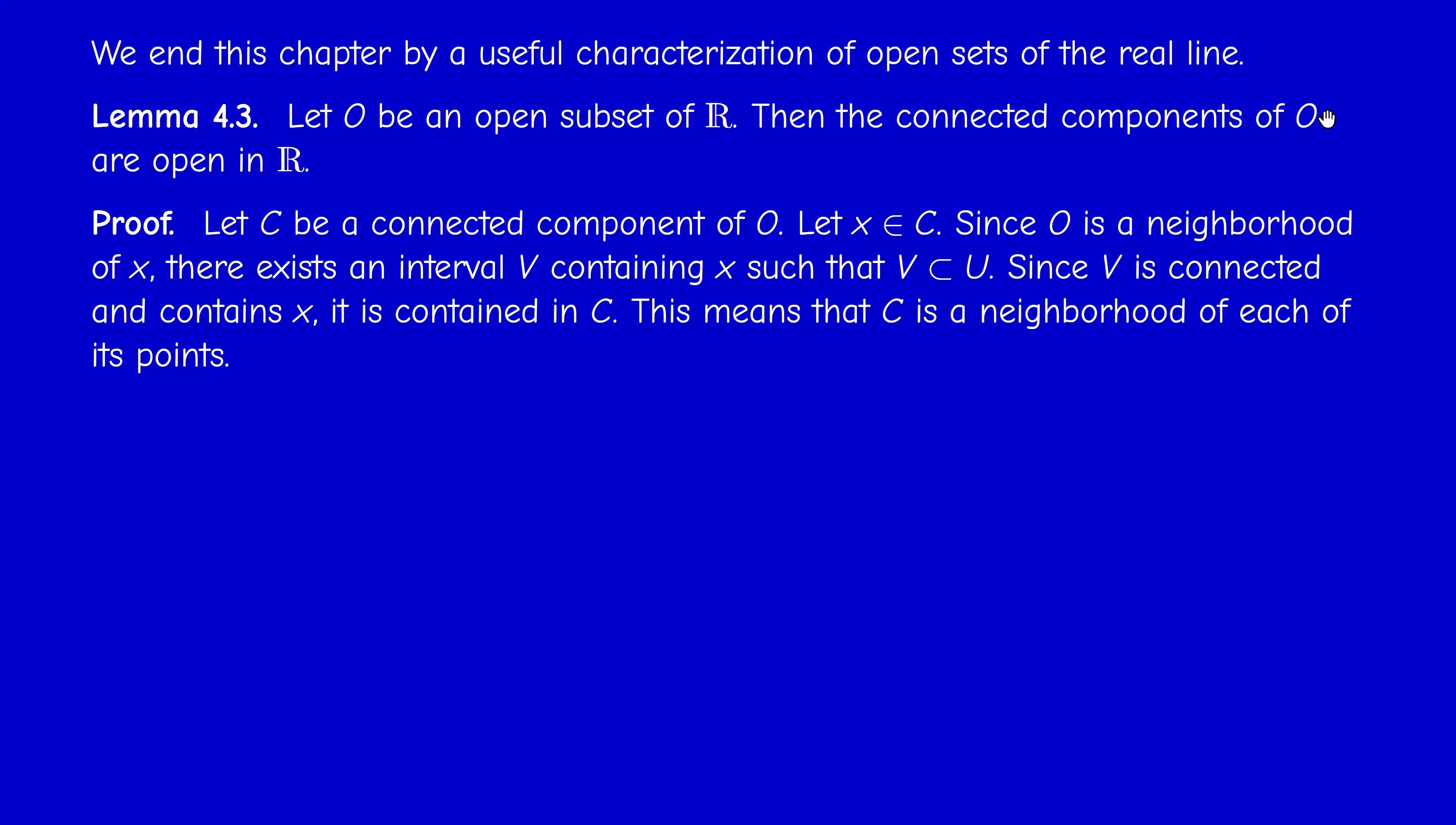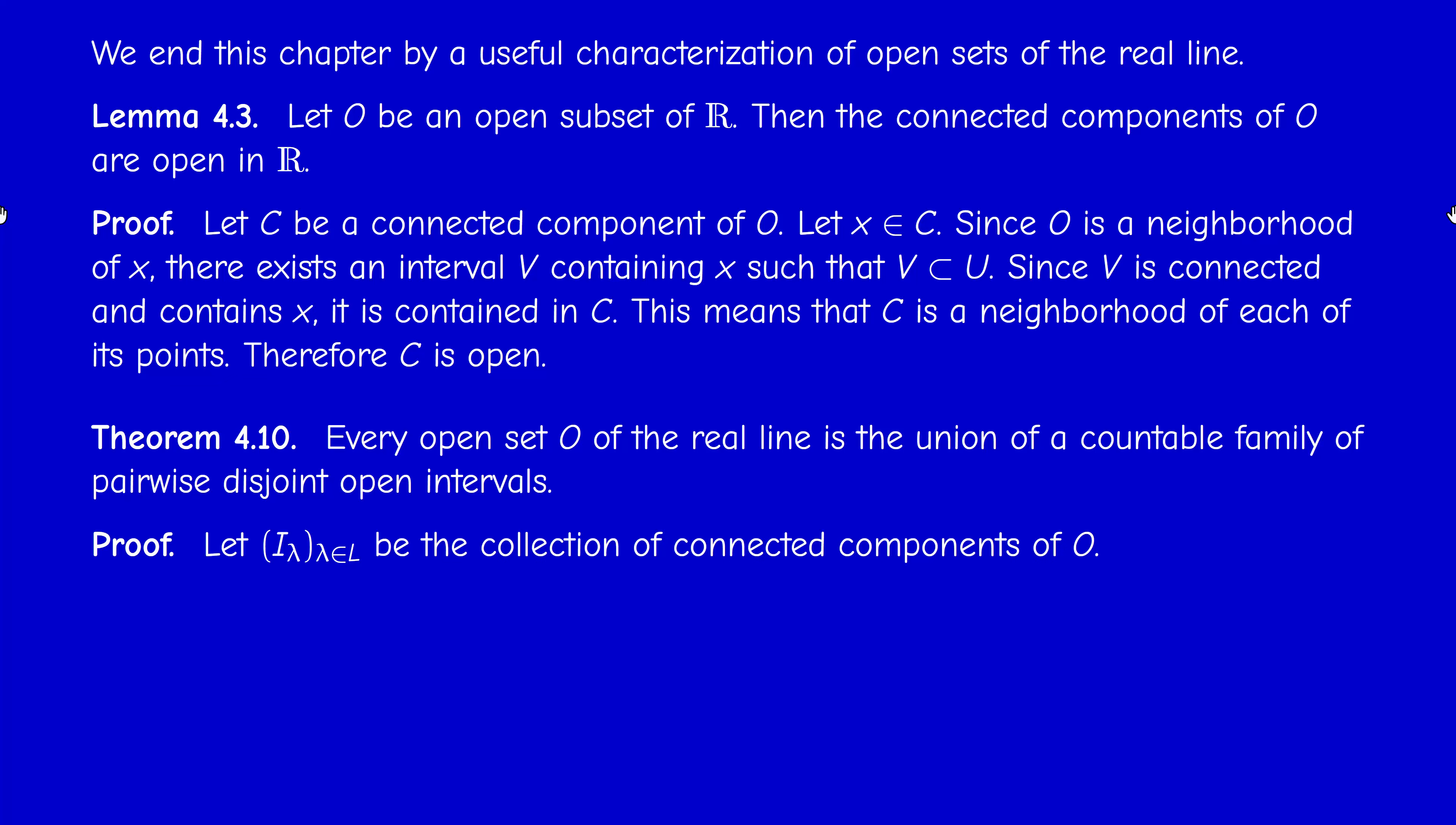So the last result is the one I mentioned: every open subset O of the real line is a countable union, as a disjoint countable union of open intervals, like ℝ without ℤ.